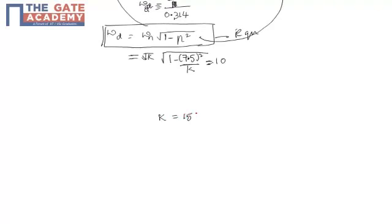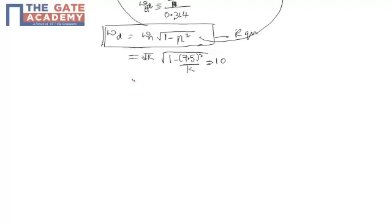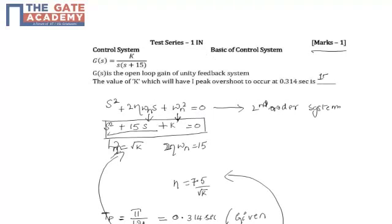By simplifying this equation, we can obtain k equal to 156. Simplifying further: √(k − 7.5²) equals 10, so k − 56.25 = 100, giving k equal to 156. So we have obtained the value of k as 156.